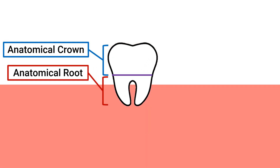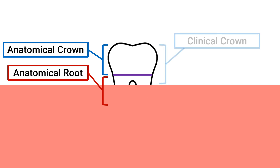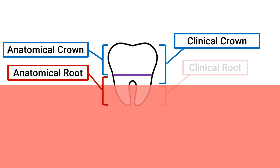The clinical crown deals with what is visible to the naked eye. Let's simulate what this tooth would look like to us during a clinical examination. We wouldn't be able to see the roots — those are covered by the gums. Any portion of the tooth that's visible above the gum line is known as the clinical crown, and anything below the gum line that you would not see is the clinical root.